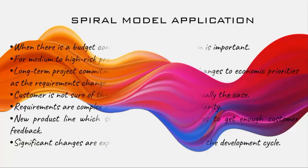Speaking about the applications of the spiral model: it is used when there is a budget constraint and risk assessment is important. It is suitable for medium and high-risk projects. It supports long-term project commitments where changes to priorities may occur. It is also used when the customer is not sure about requirements, or requirements are complex and need evaluation for clarity. It applies when a new product line is released in phases to accumulate customer feedback, and when significant changes are expected during the development cycle.